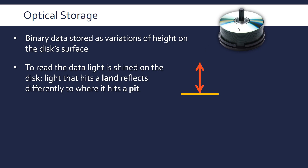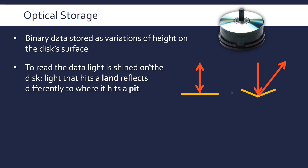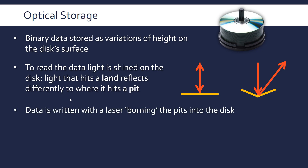When light is shined on a land — a flat bit — it just gets reflected straight back up, a standard reflection. But if it hits a pit, it bounces off at a different angle, so the reader can tell whether it's representing a one or a zero. That's how you read data off an optical disk. You write data with a laser that burns these variations — burns the pits — into the disk.